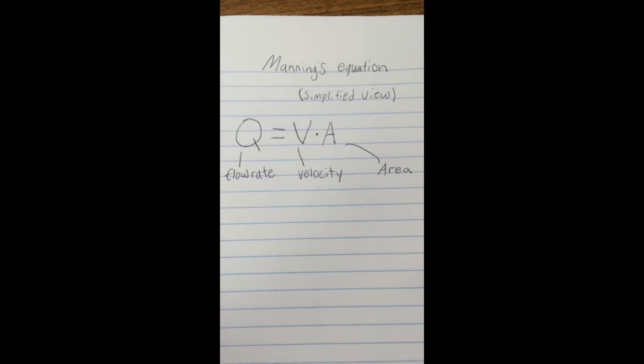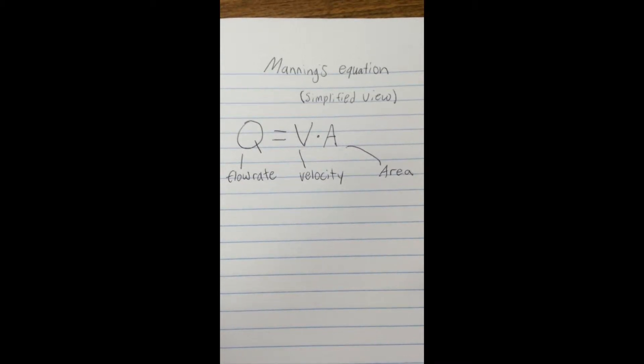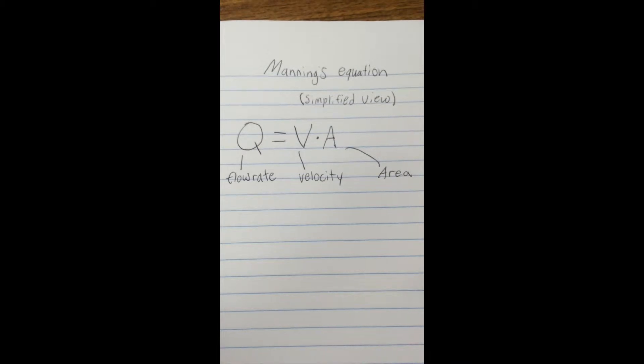As you can see in the illustration, flow rate Q is equal to velocity multiplied by the area, but we can also break this equation down even further, which we'll cover next.